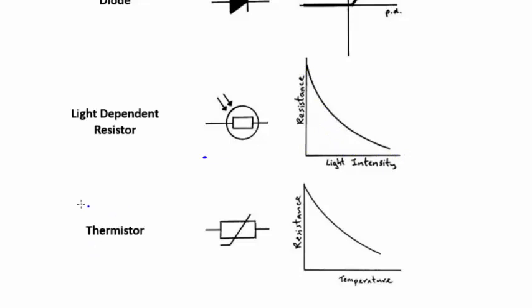Similar to a light-dependent resistor, a thermistor's resistance also changes. However, it changes when the temperature changes. A thermistor's resistance depends on temperature.